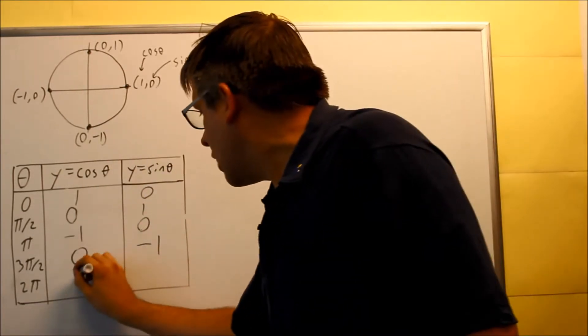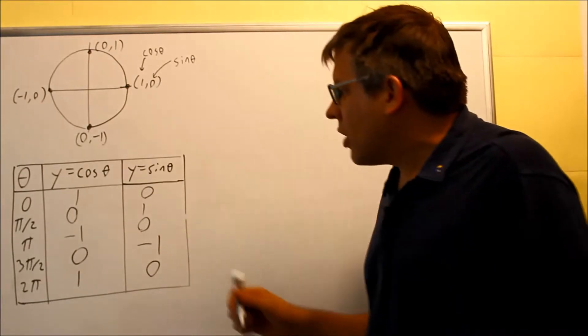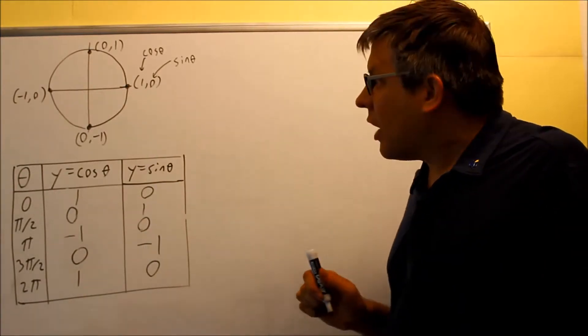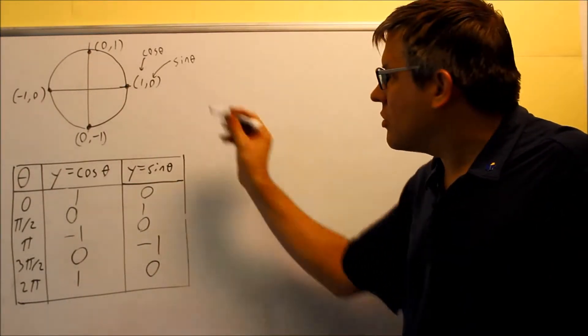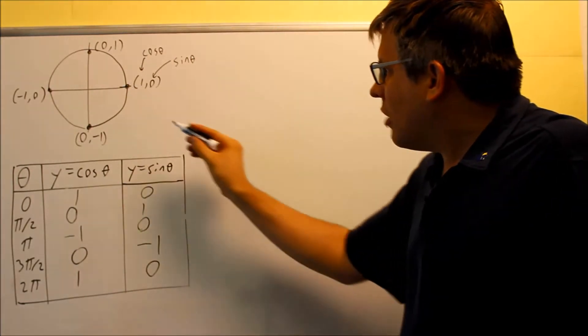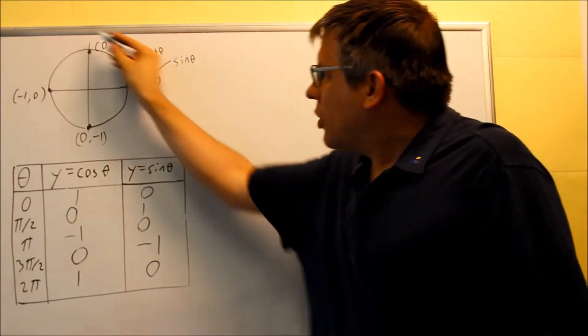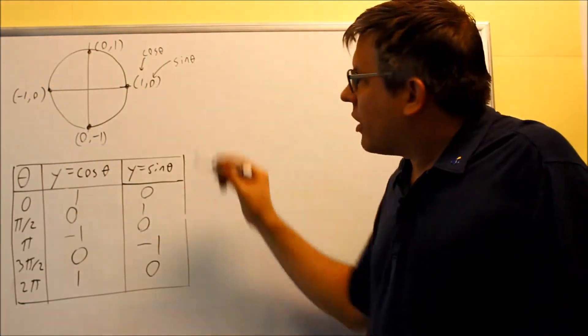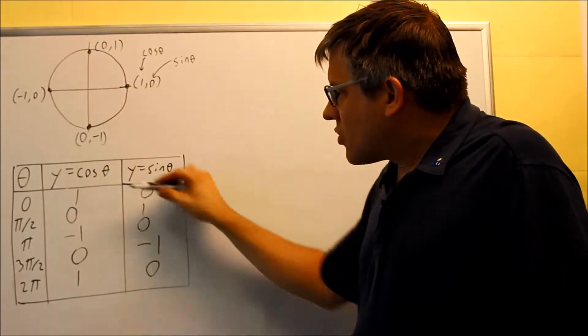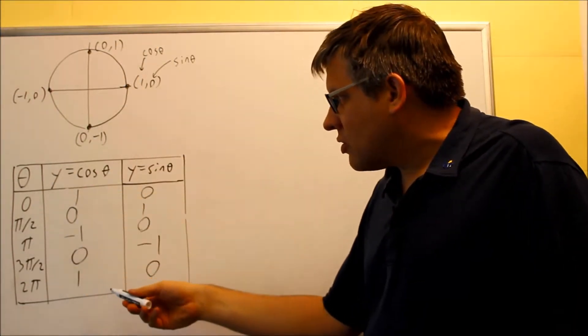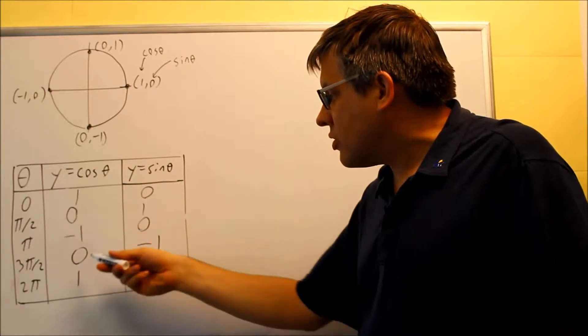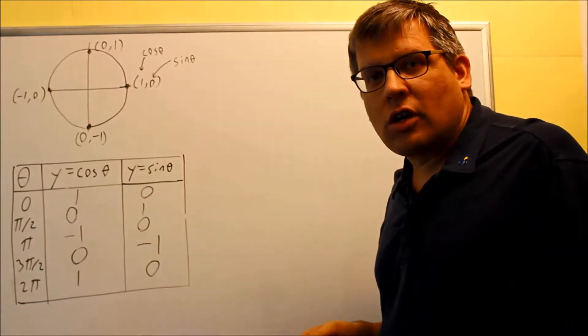And then you're going to come back to here again and we get one and zero again because zero is the same thing as two pi. That's zero and 360 degrees, all the way around. And if I keep going around, it's just going to repeat the same pattern all over again. This pattern continues forever: one, zero, negative one, zero, one. It starts all over again and keeps on going.